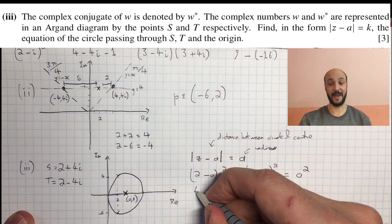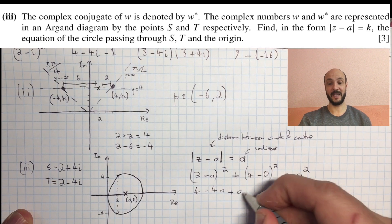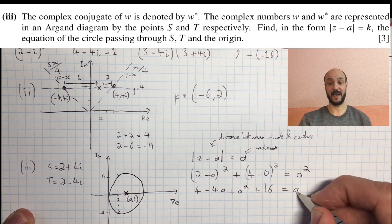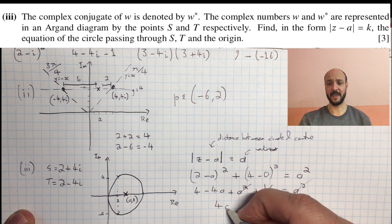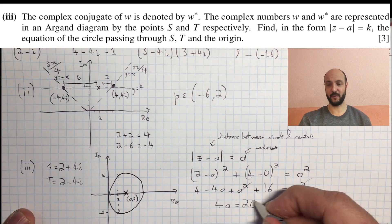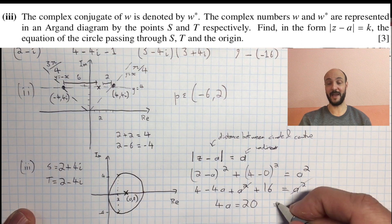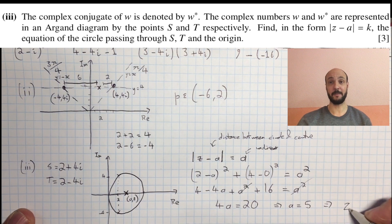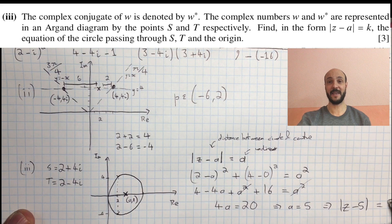And so we can expand that and we get 4 minus 4a plus a squared plus 16 is equal to a squared. Our a squares then cancel out and leave us with 4 minus 4a equals minus 16, or 4a equals 20, or a equals 5. So we can write it back into our equation as the modulus of z minus a equals 5.